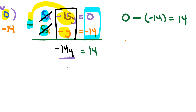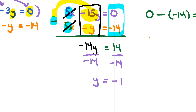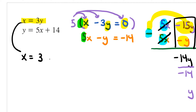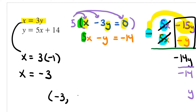So I have a positive 14 on the right-hand side. Then I can divide both sides by negative 14, and that means y equals negative 1. So y equals negative 1. Now we're going to go back to the very first equation, which is x equals 3y. And remember, y equals negative 1, so just plug that in. And 3 times negative 1 is going to be negative 3. So my final answer is going to be negative 3 comma negative 1.